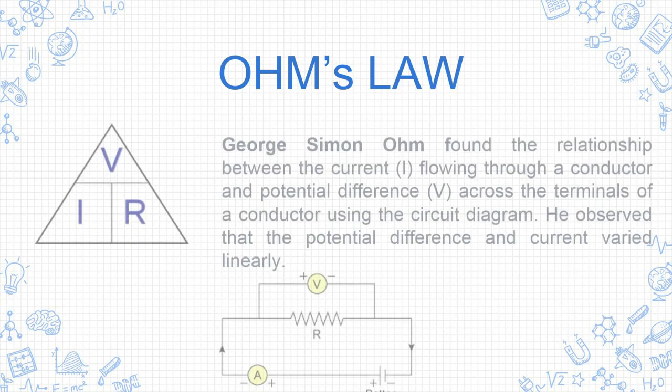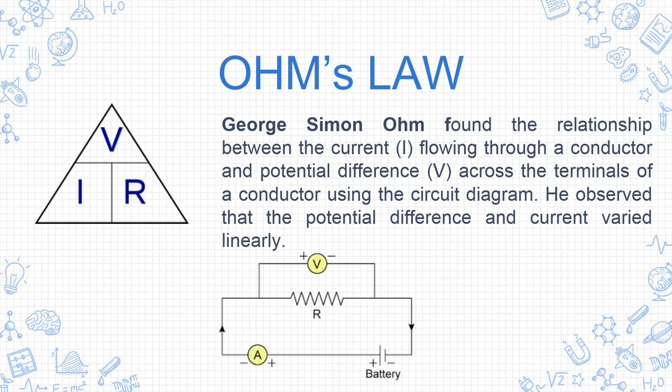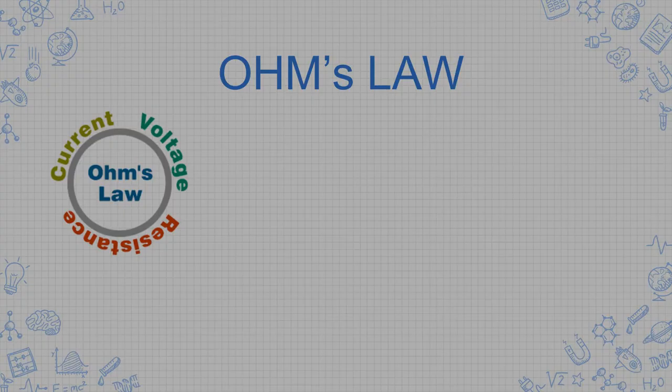What is Ohm's law? George Simon Ohm found the relationship between the current flowing through a conductor and the potential difference V across the terminals of a conductor using a circuit diagram. He observed that the potential difference and current varied linearly.